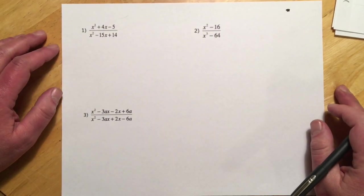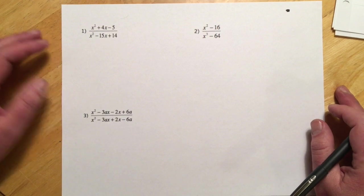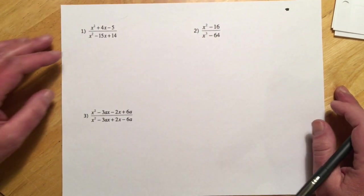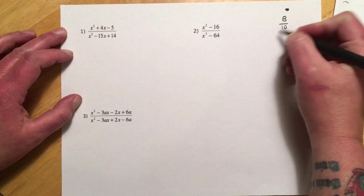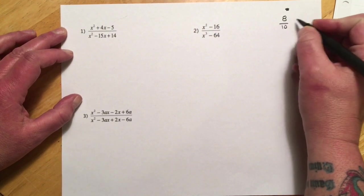Hey guys, so in this video we're looking at reducing rational expressions. Rational expressions are basically just a fraction. If you think of an old-school fraction, like eight-tenths,